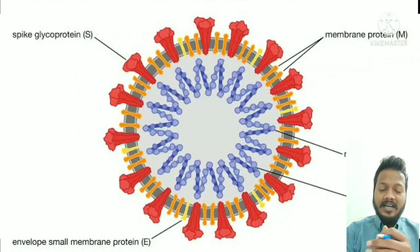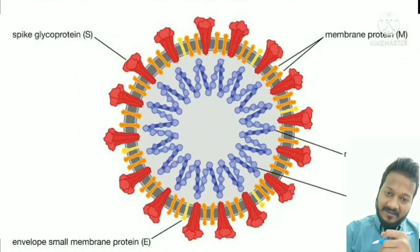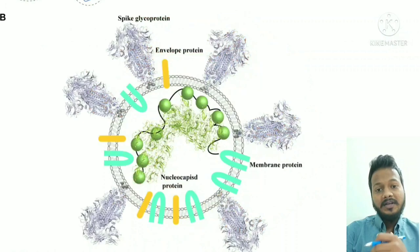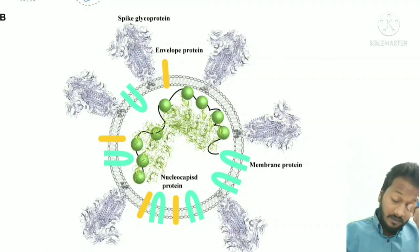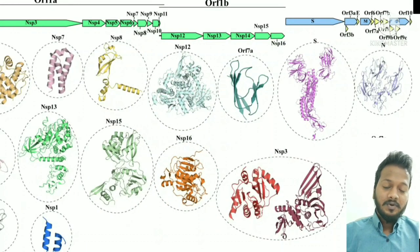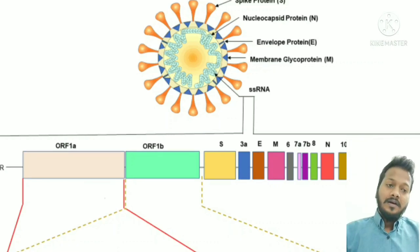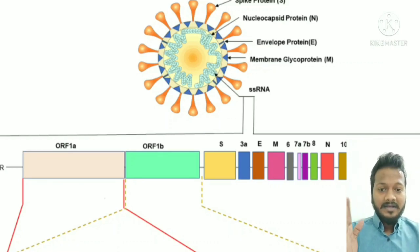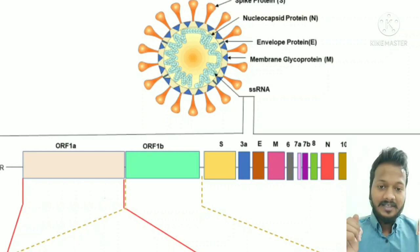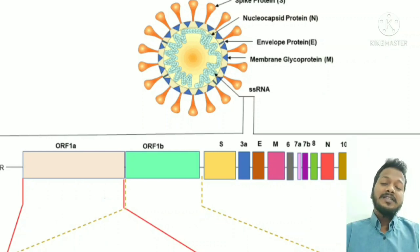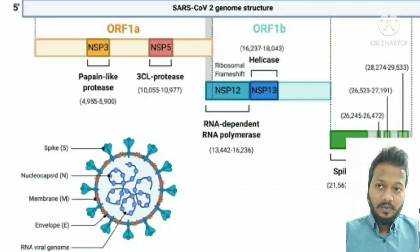Outside the capsid we see an envelope. This envelope has certain proteins: spike glycoprotein, E protein, and M protein. Apart from these, there are other proteins like N protein and 16 non-structural (NS) proteins. These proteins are coded by their respective genes: spike glycoprotein by S gene, E protein by E gene, M protein by M gene, N protein by N gene, and 16NS proteins by the open reading frame gene.